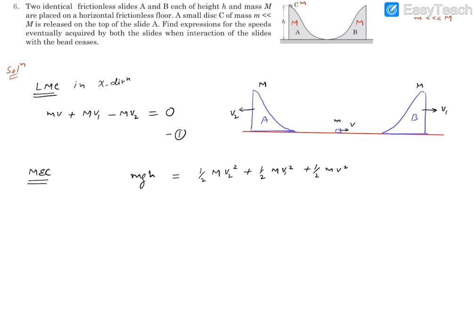Another thing the question says is that m is very very small as compared to capital M. Moreover, we have found out that v1 is going to be greater than v in the final scenario. So small m and small v together will give even a smaller number, so this small m v is going to be negligible.